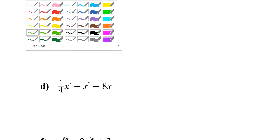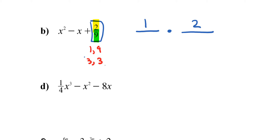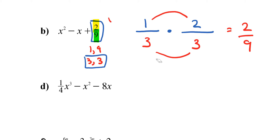For letter B, let's focus on the last number, which is 2/9. I need two fractions that multiply to 2/9. Since I have a 2, the only combination for the numerator is 1 and 2. For the 9 I have 1 and 9, or 3 and 3. I know the 3 and 3 case will work, so putting 3 here and 3 here: 1 times 2 is 2, and 3 times 3 is 9, so I get 2/9.